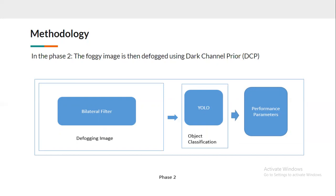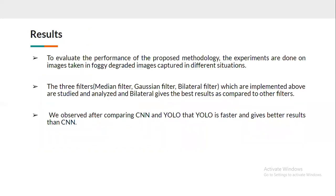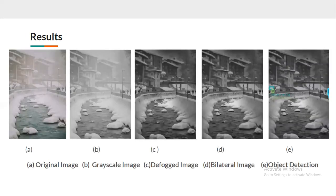Then we apply performance metrics. To evaluate the performance of the proposed methodology, experiments are done on foggy and degraded images captured in different situations. The three filters — median, Gaussian, and bilateral — are studied and analyzed, with bilateral giving the best results. For object detection, YOLO is faster and gives better results than CNN. As you can see in the results: original image, grayscale, defogged image, bilateral-filtered image, and finally object detection.